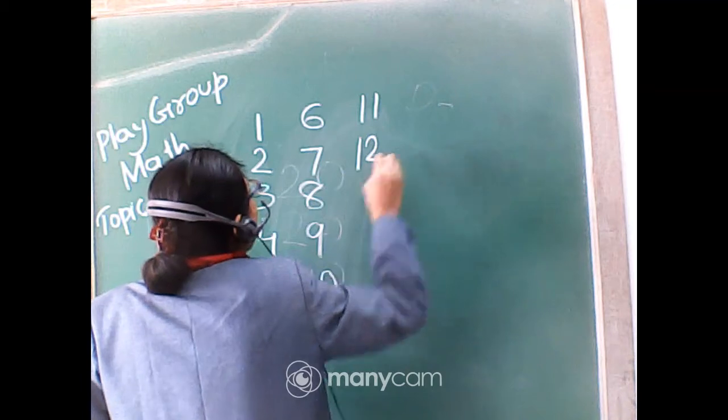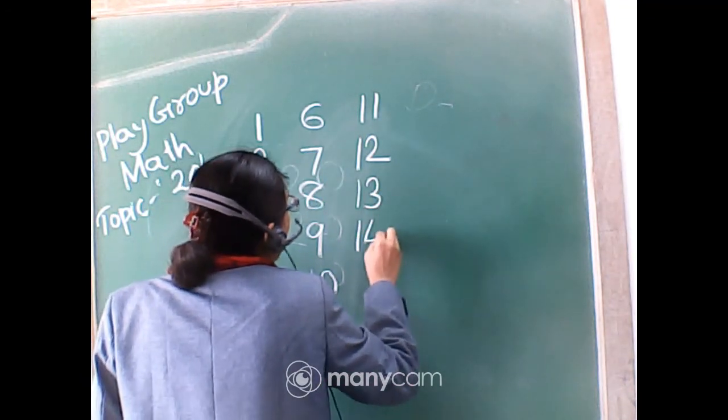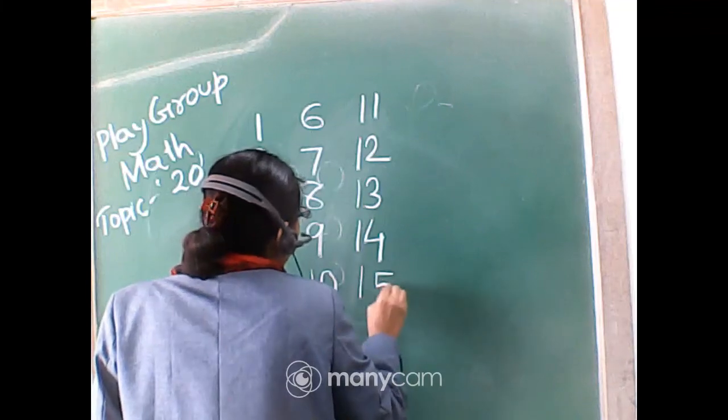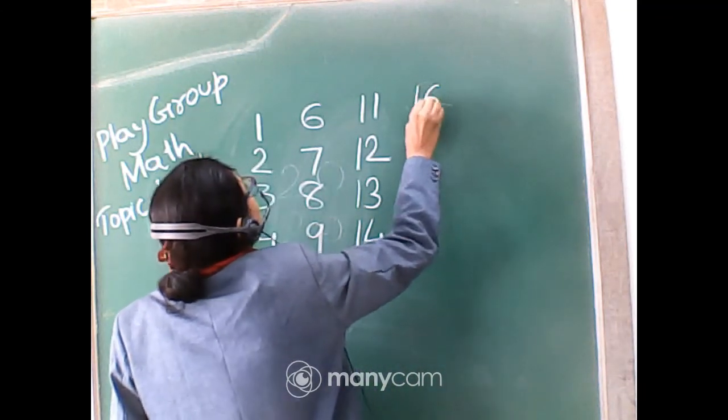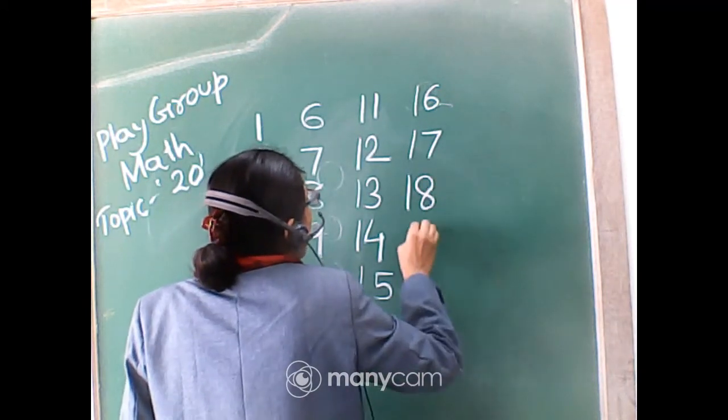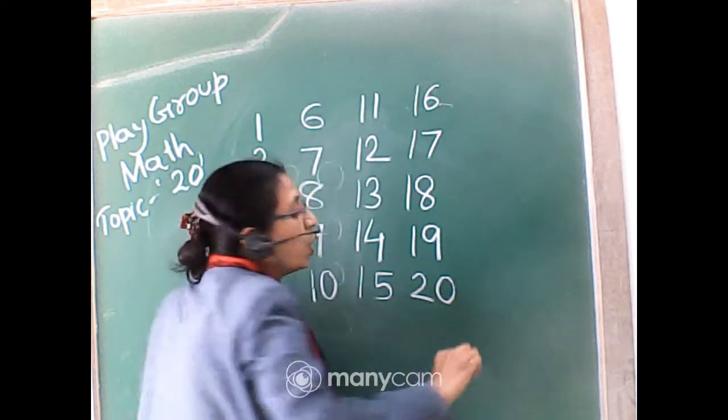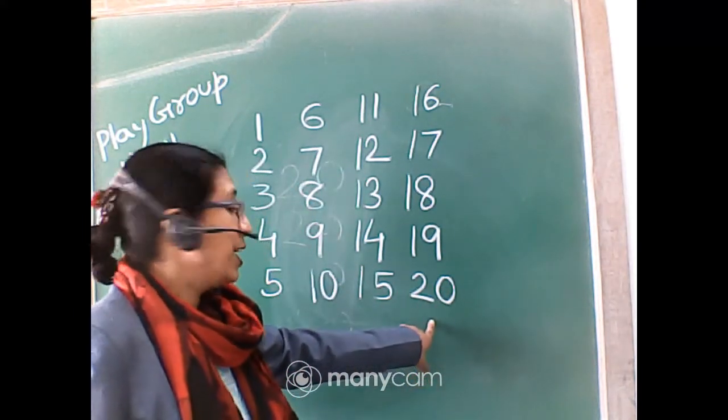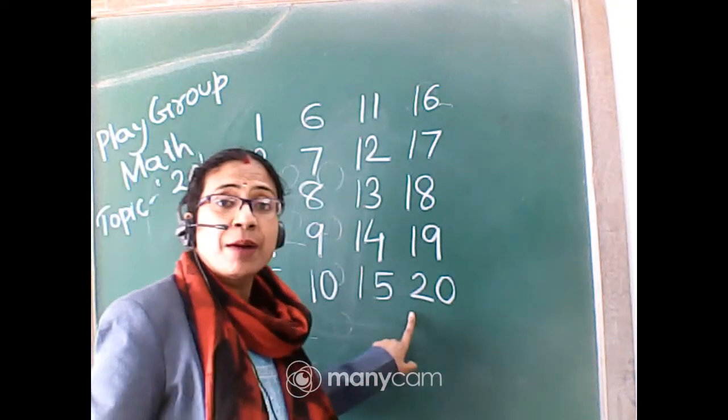1, 2, 12. 1, 3, 13. 1, 4, 14. 1, 5, 15. Then after 1, 6, 16. 1, 7, 17. 1, 8, 18. 1, 9, 19. And 2, 0, 20.